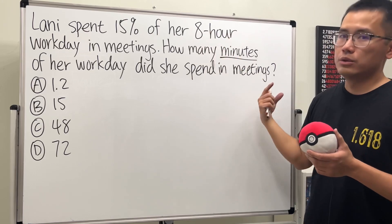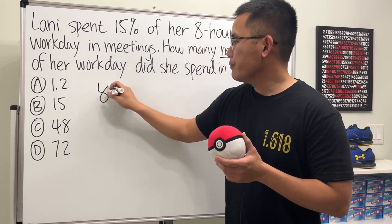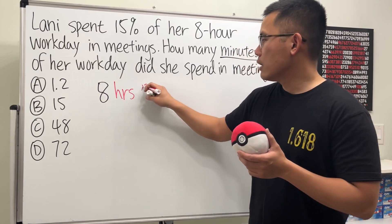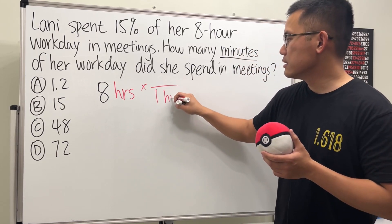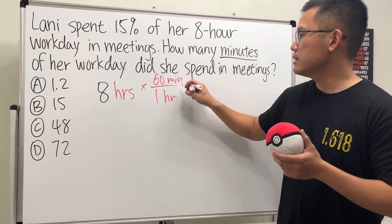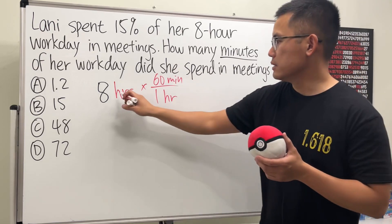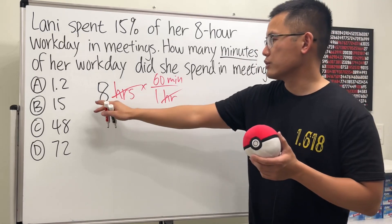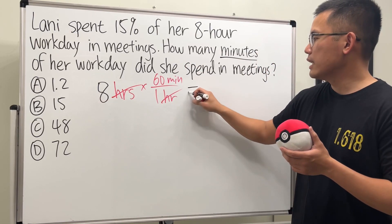We need to change the 8 hours to minutes first. We know that each hour has 60 minutes, so we multiply by 60 minutes over 1 hour. The reason we set it up this way is so that the hour units cancel, and we just do 8 times 60 minutes.